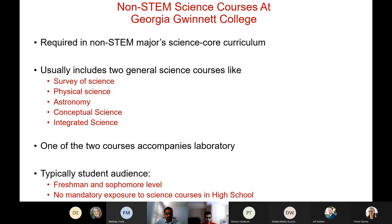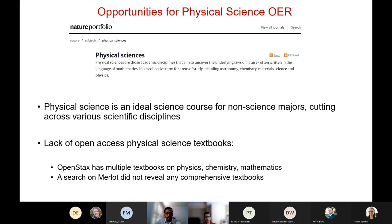The typical audience is freshman or sophomore level, with varied background knowledge. We looked up what physical sciences means according to Nature Portfolio and figured that physical science is an ideal science course for non-science majors, cutting across various scientific disciplines. With that background, if we were to adopt a theme called Science of Everyday Materials, we were not able to find textbooks meant for this type of audience and content.